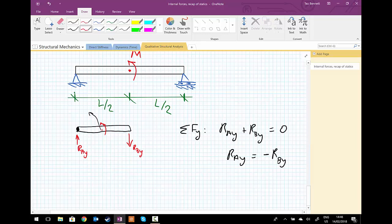And then using our sum of the forces in the y direction, RAY must therefore point upwards. Or you can do the same idea again and take a look from B with this moment trying to rotate the beam anticlockwise.